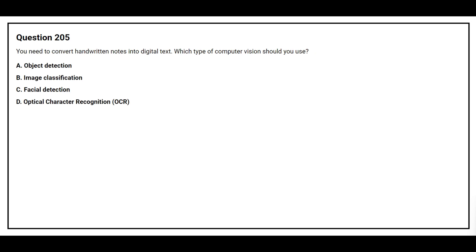Question 205: You need to convert handwritten notes into digital text. Which type of computer vision should you use? Option A: Object detection. Option B: Image classification. Option C: Facial detection. Option D: Optical character recognition. The correct answer is Option D, Optical character recognition.